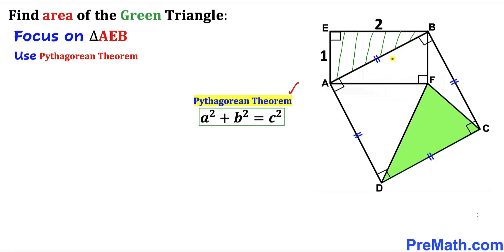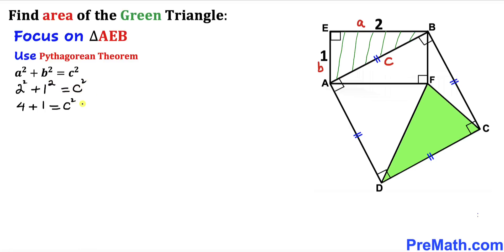Let me call this longest leg side C, this side A, and this side lowercase B. Filling in the Pythagorean formula: A in our case is 2, so this becomes 2 squared, plus B is 1, so plus 1 squared, equals C squared. So 4 plus 1 gives us C squared equals 5.